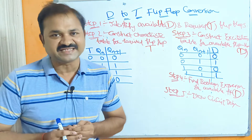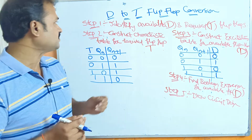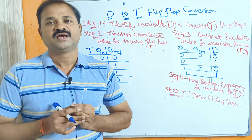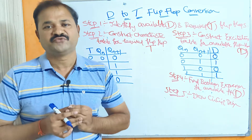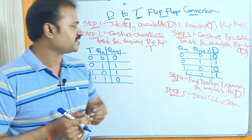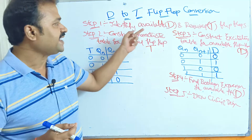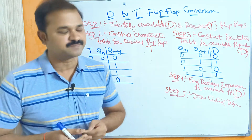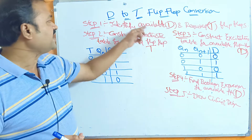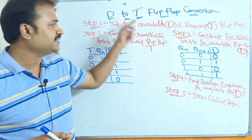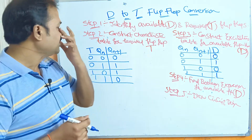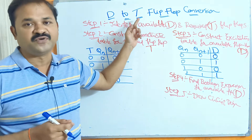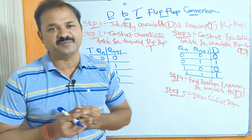Let us discuss D-to-T flip-flop conversion. Here we have to follow 5 steps. Step 1 is to identify the available and the required flip-flops. The available flip-flop, meaning the input flip-flop, is the D flip-flop, whereas the required flip-flop, meaning the output flip-flop, is the T flip-flop.